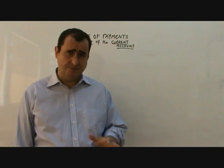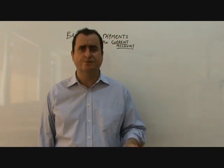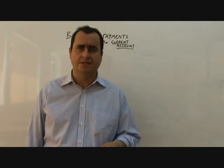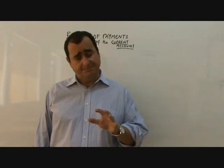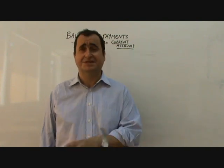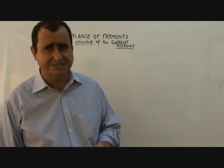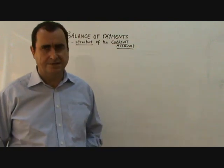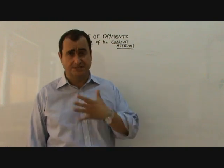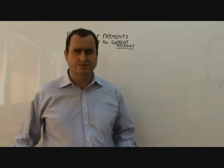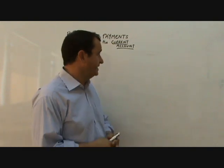The balance of payments is split between two accounts: the current account and the capital account. All flows of money in and out of the country are recorded in one part of the balance of payments, either the current account or the capital account. I want to focus on the current account, which is the one where most of the questions in economics come up for A-level students, and also the one which gets most of the reports on the news.